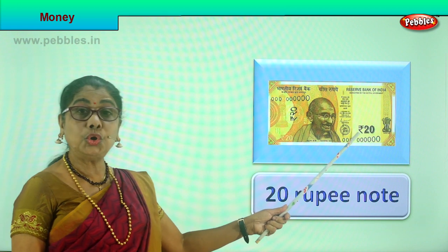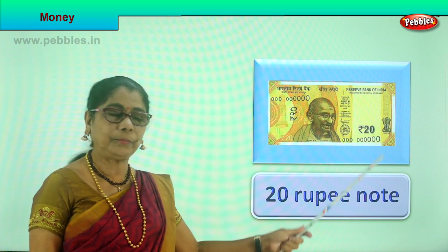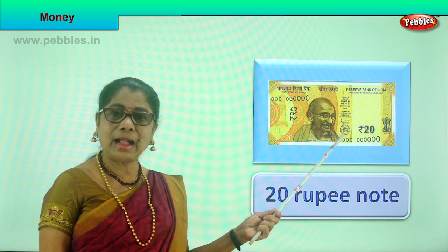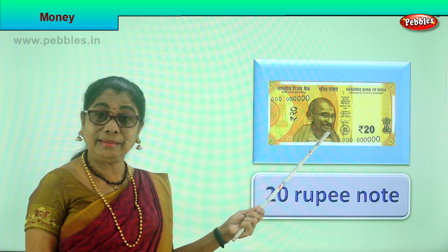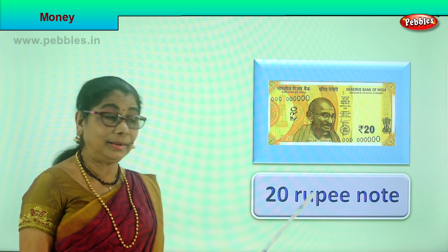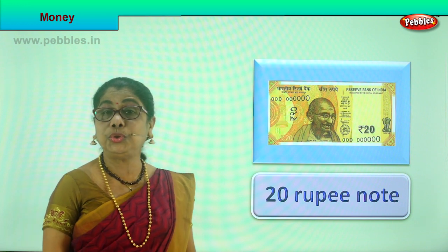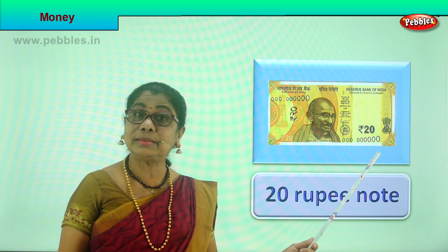Let's look at the next higher value in paper money. Look at this - a nice pista green note with 'rupees twenty' written on it. This is the twenty rupee note. It is the next higher value than the ten rupee note. What is the color? Pista green - it's a lovely color, you cannot miss it. Twenty rupees is a higher denomination than the ten rupee note.